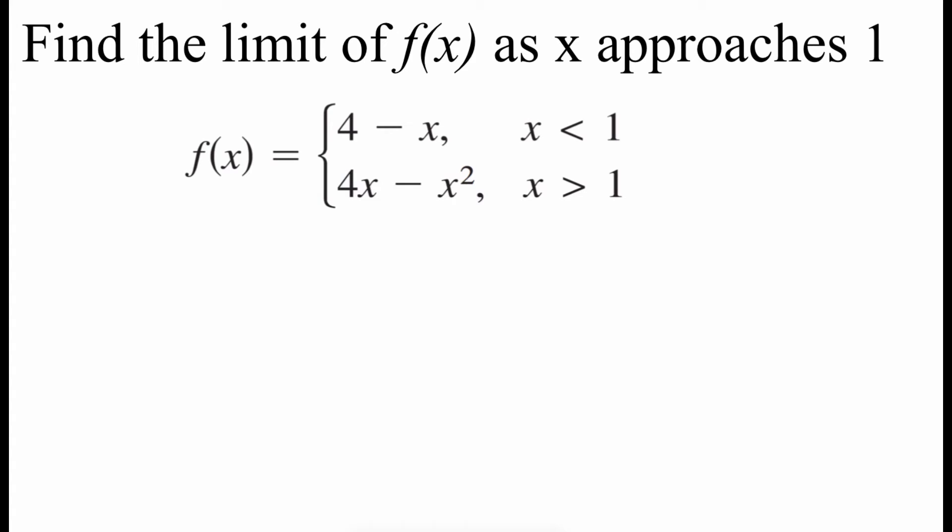Another way we can use one-sided limits is to help us determine if a limit exists. So we've got this piecewise defined function. We've got 4 minus x for x values that are less than 1 and we've got 4x minus x squared for x values that are greater than 1, and what we want to do is we want to take a look at this limit as x approaches 1. But the problem is we've got two separate pieces and it doesn't say which one to use if x is equal to 1. So what we're going to do first is we're going to approach this 1 from the left-hand side. So we're checking out this top piece of our function since that's where we're dealing with x values that are less than 1. Now we can use direct substitution here to plug that 1 in for x. So we get 4 minus 1 which is 3.